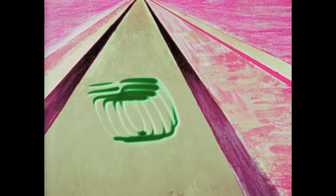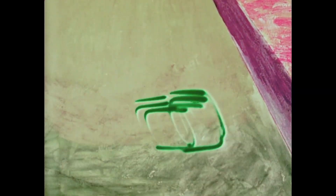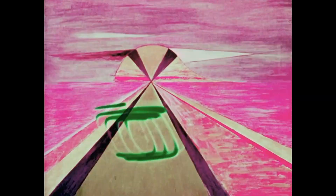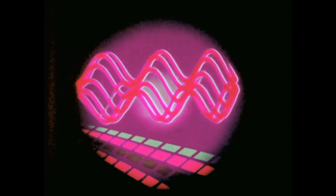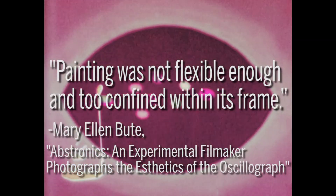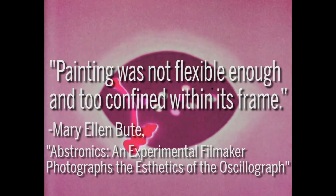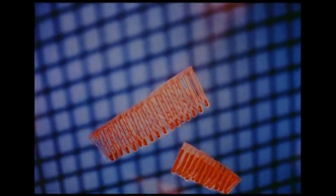Mary Ellen Butte made around a dozen such films between 1933 and 1953. Originally from Houston, Texas, Butte studied painting at the Pennsylvania Academy of Fine Arts. As a young student, she attempted to capture musical forms through visual means, but found that painting was inadequate to the task. She recalls of that time: "Painting was not flexible enough and too confined within its frame." She experimented with different media, including a color organ, before ultimately finding her way to cinema.